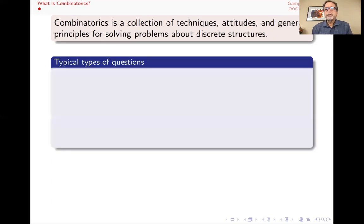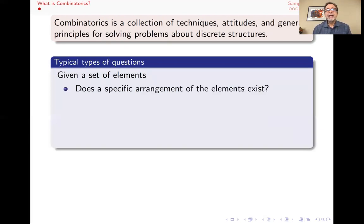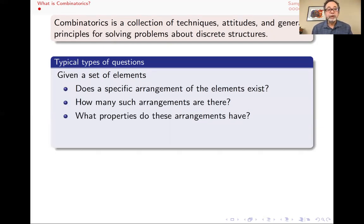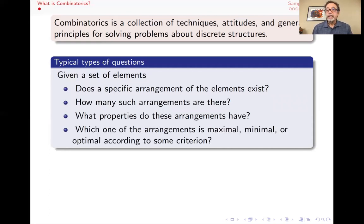The typical kinds of questions we ask: we have a set of elements, often finite but not necessarily, and we want to ask, does some kind of specific arrangement exist among those elements or not? If so, how many of those arrangements are there? Counting is a big part of combinatorics. What properties do those arrangements have? And if there's more than one, which one is maximal or minimal or optimal according to some criteria?